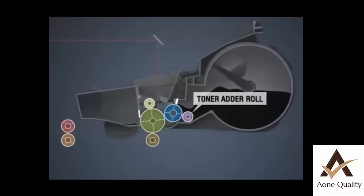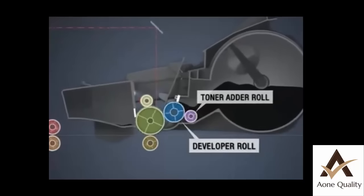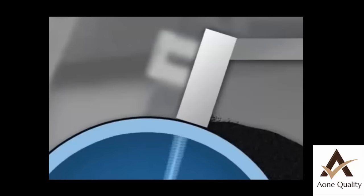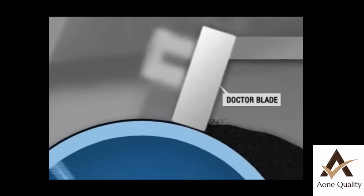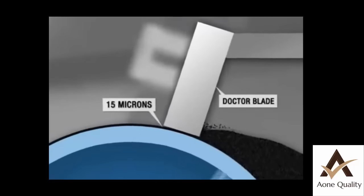The toner adder roll coats the developer roll with toner while electrostatically charging the particles. As the toner is placed on the developer roll, a leveling device called a doctor blade evens the toner to a thickness of approximately 15 microns, just slightly thicker than a strand of silk.